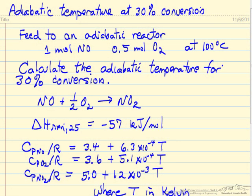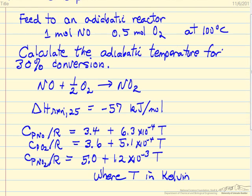In this example we calculate the adiabatic temperature for a reactor where we have 30% conversion. The idea is we're feeding 1 mole of NO, 0.5 mole of O2 at 100 degrees C, and what we want is the adiabatic temperature if 30% of the NO is converted with this being the reaction that we're interested in.